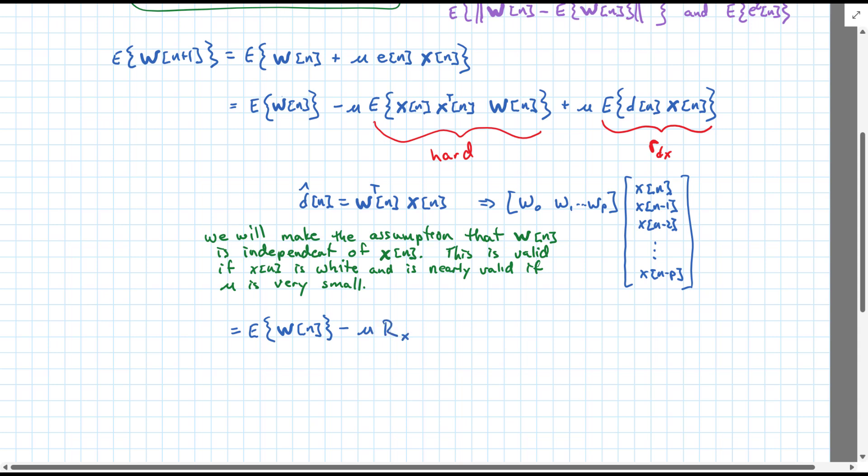With our expected value of x, x transpose term brought out and separated from the expected value of w of n in this manner. And finally, we just have our r dx over there. So, this actually looks very familiar in that it looks like what we had before with our steepest descent. Except that the only difference here is now we have expectations instead of just values of w.